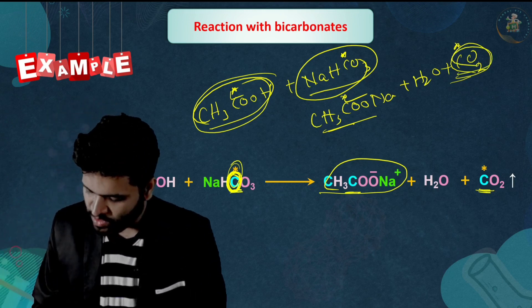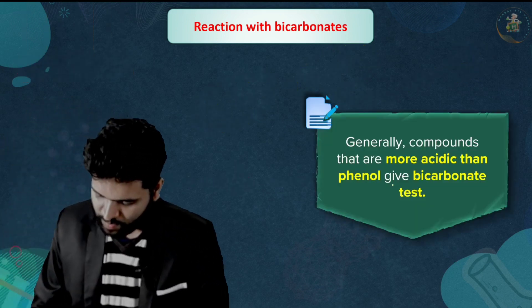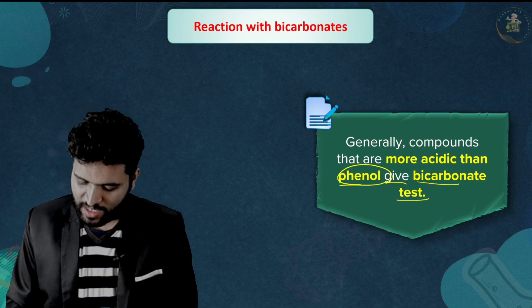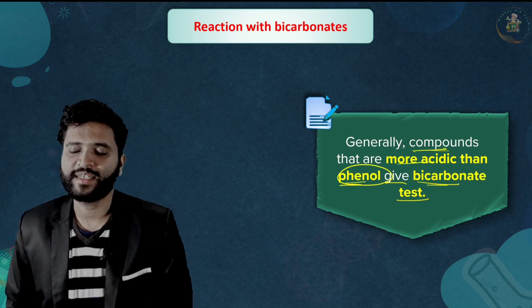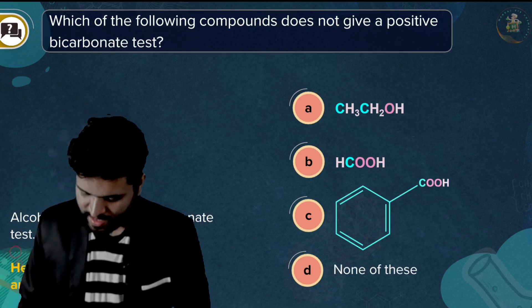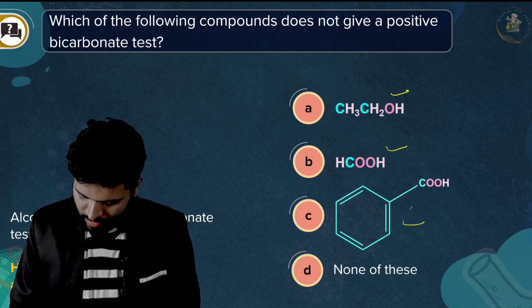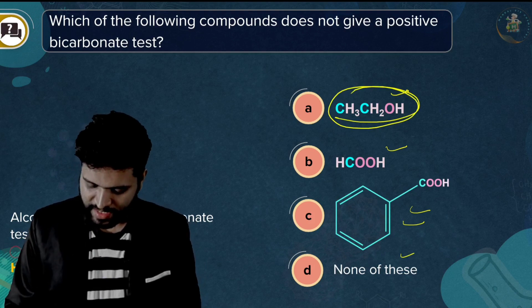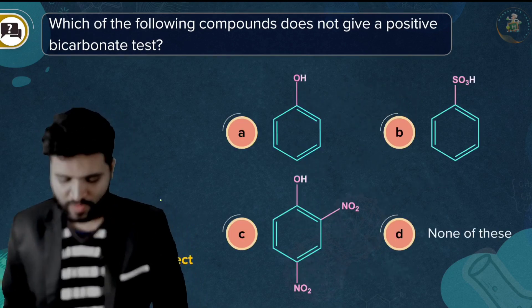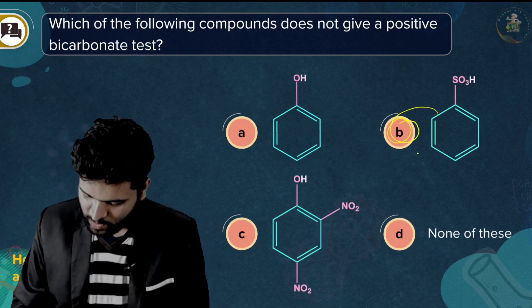Generally, compounds that are more acidic than phenol give a positive bicarbonate test. Phenol does not give the bicarbonate test. Alcohols also do not give the bicarbonate test. So among the choices — benzoic acid, alcohol, phenol — alcohol does not give a positive bicarbonate test.